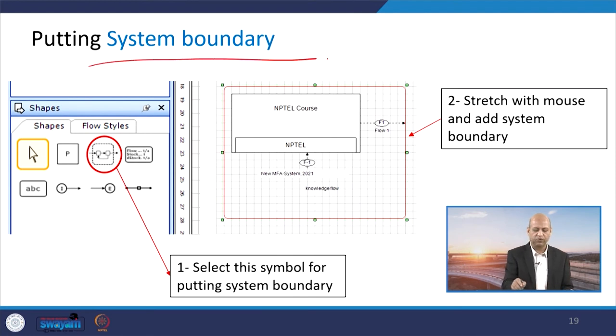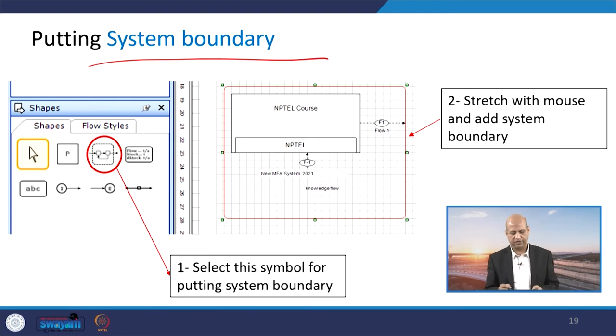When we see the system boundary we want to make, here system boundary related shape is there which you can use. Then as you see when you go for screenshot, etc., that way simply you can stretch and have the boundary layer within those particular activities.